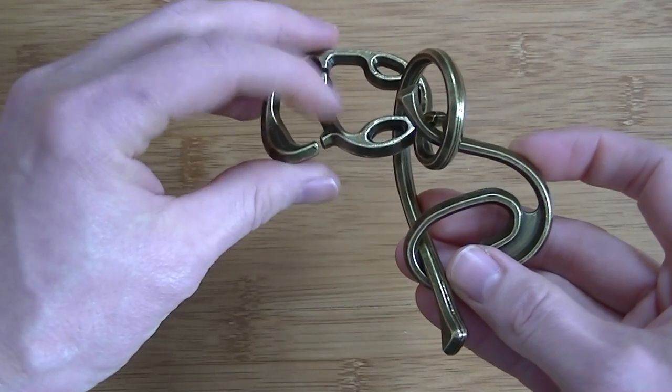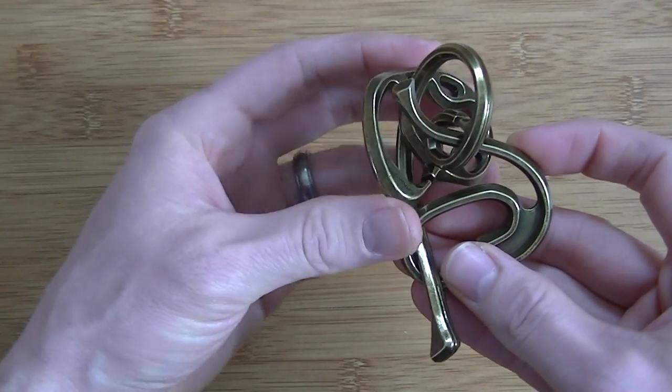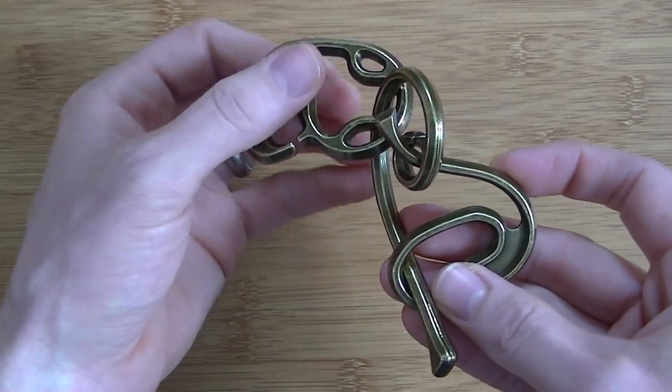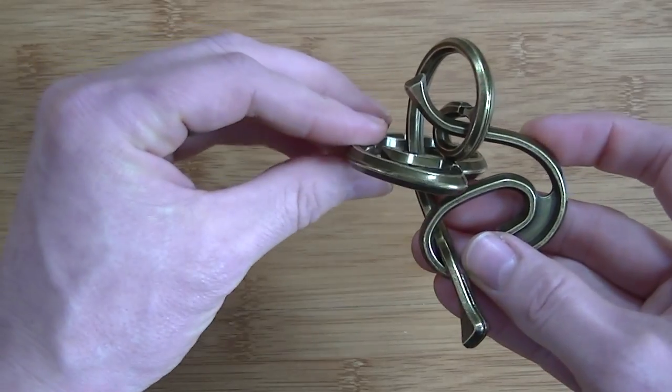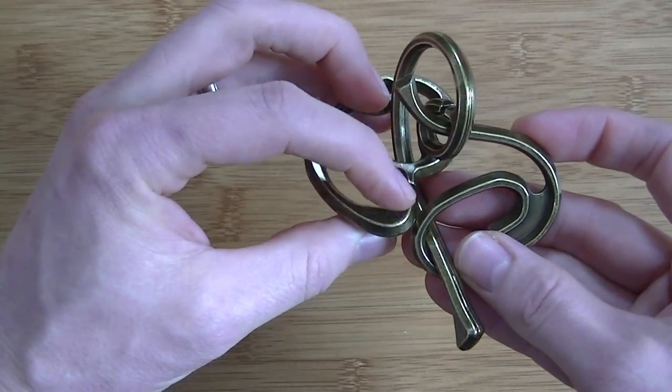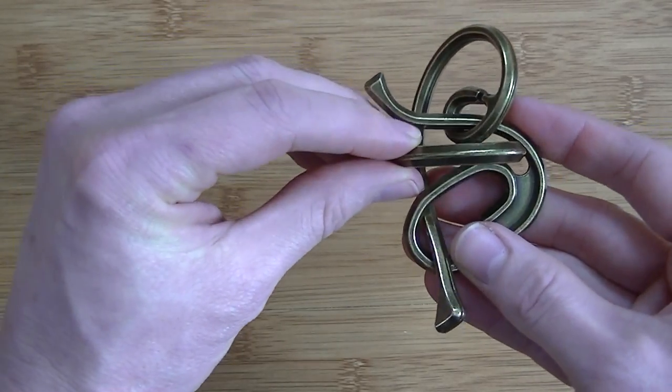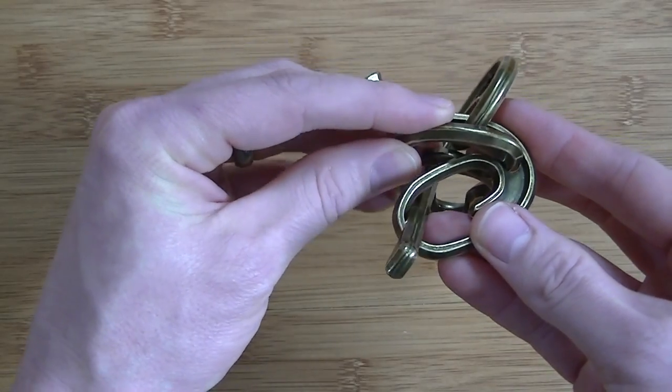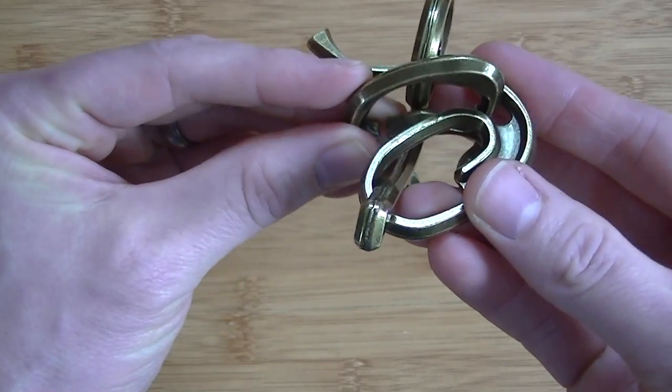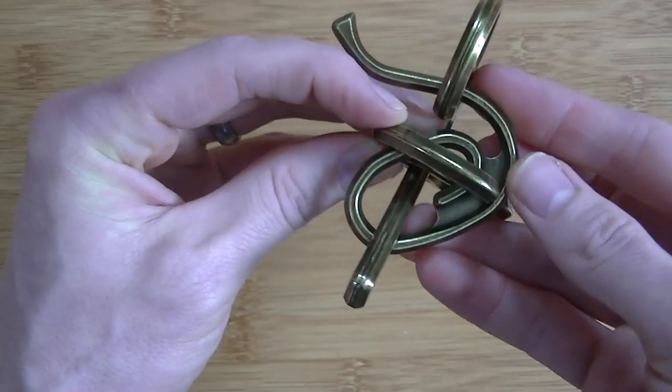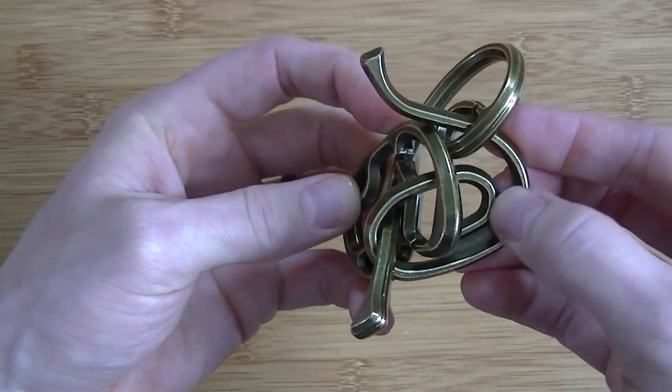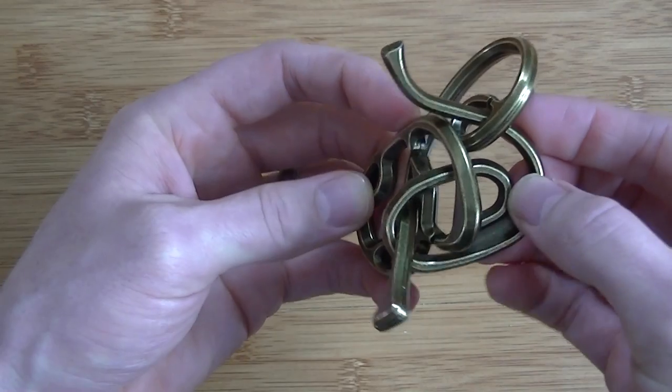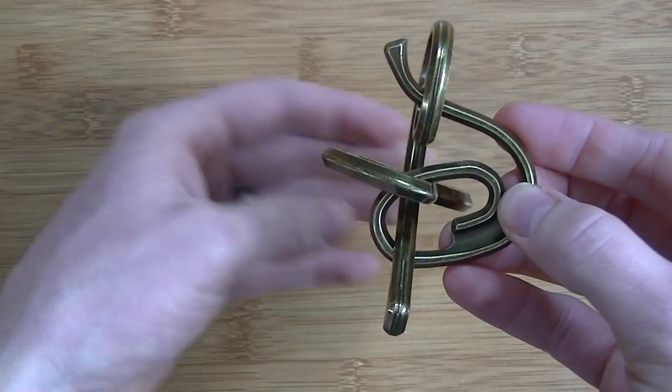So I'm going to start out with this piece here. This is the one that has the Hanayama stamped into it. And that piece is going to take the little gap right there and go down into here, and you can kind of see right there that that will go over this small thin part here so that it's into there.